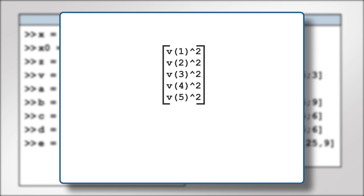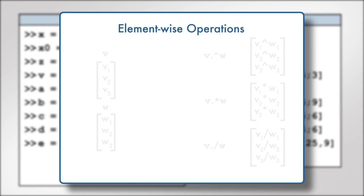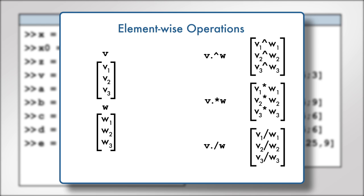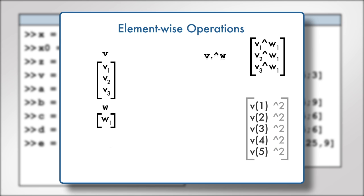The element-wise power operation is one of three element-wise operations, including element-wise multiplication and element-wise division. We can also use element-wise operations with scalars, as we did to square individual elements of the vector v.